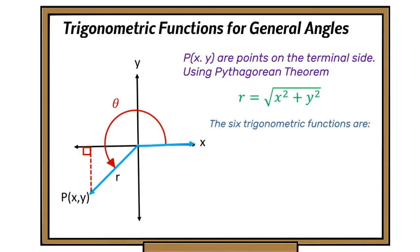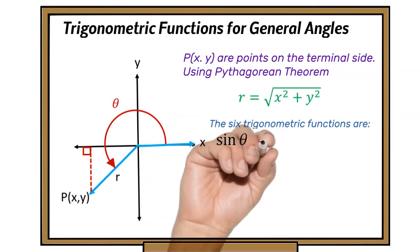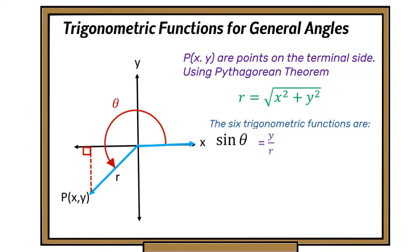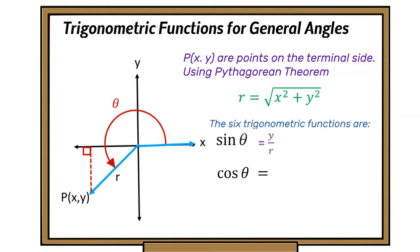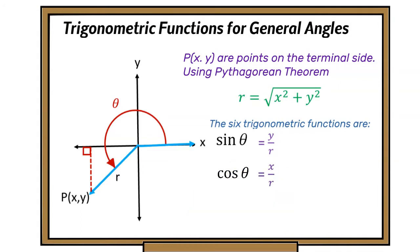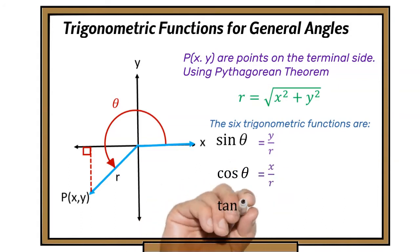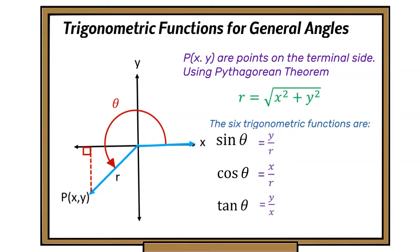With the six trigonometric functions, we've got a triangle formed. Sine of theta is y over r. Cosine of theta is x over r. And the tangent of theta is y over x.